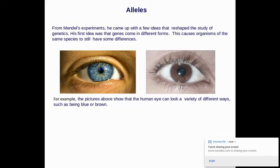So for example, eye color. Eye color can come in green, blue, brown for humans. The human eye can look in a variety of different ways, such as being brown or blue. We call that an allele.